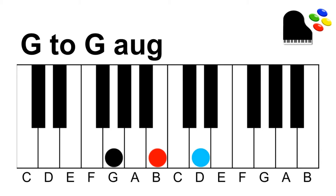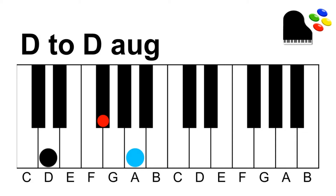Here we have G major, and we're going to go from G major to G augmented. We're going to take this top note, raise it up a half step, and we have G augmented. D major — raise this top note a half step, and now we have D augmented.